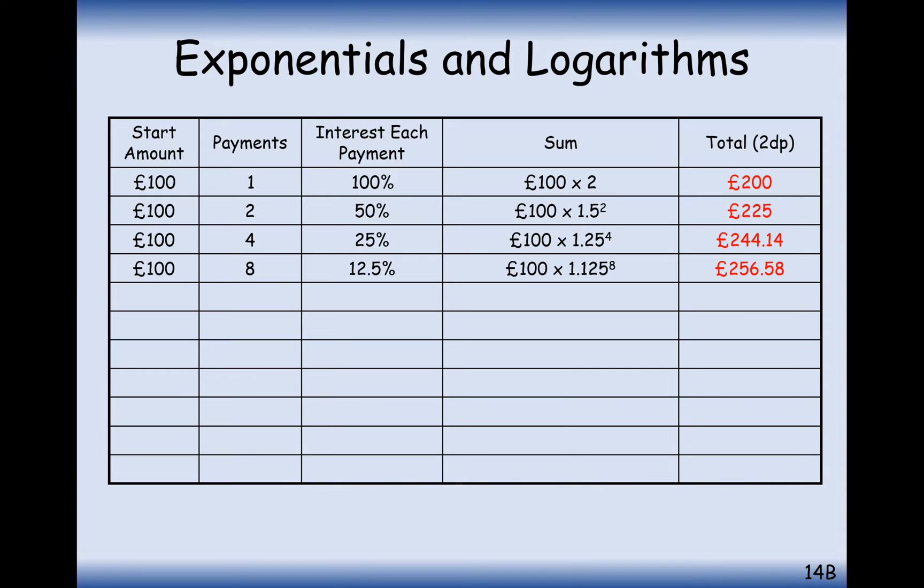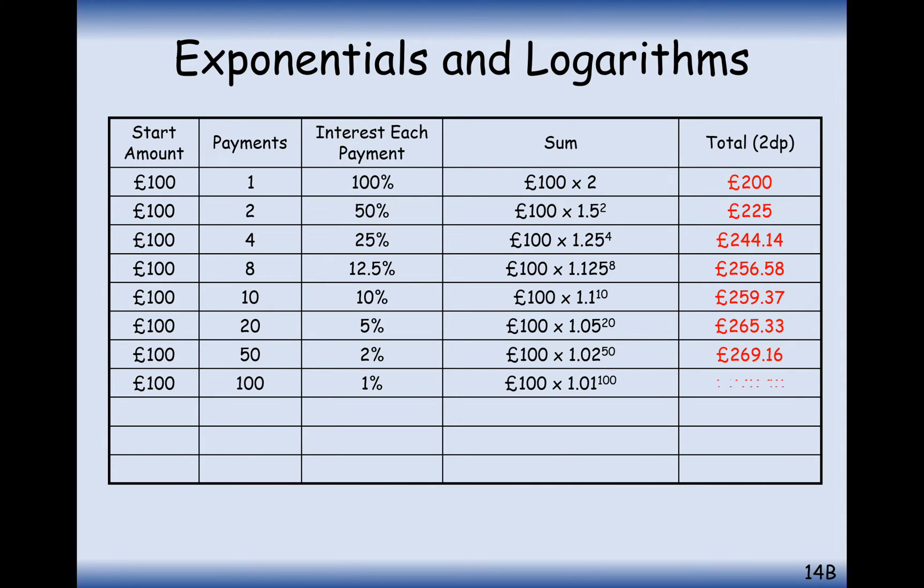Eight here is going to be £256. And as we keep on going, we can see that we're increasing, but we can sort of tell that we're not going to be increasing forever. We're probably going to stop at a certain point. So once you've paid a thousand times, 0.1% interest, you're going to get £271.69.